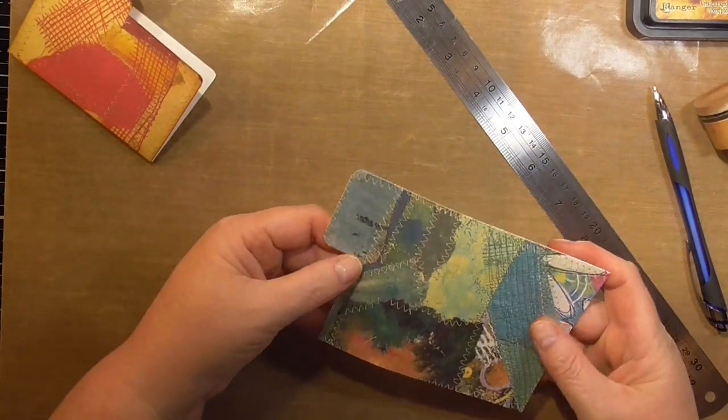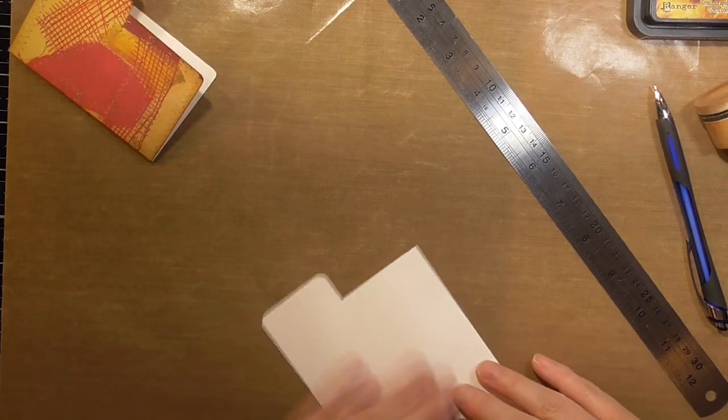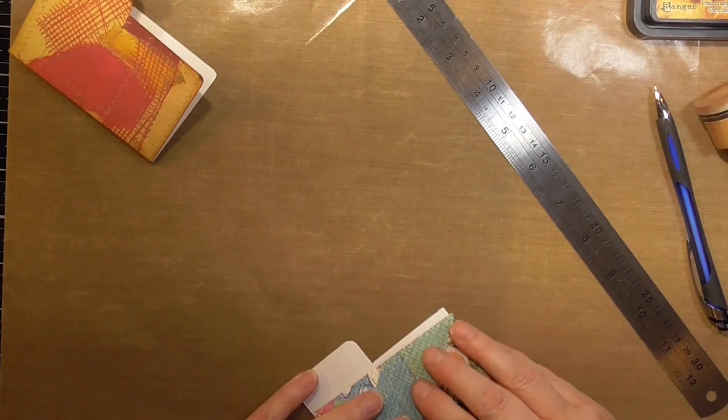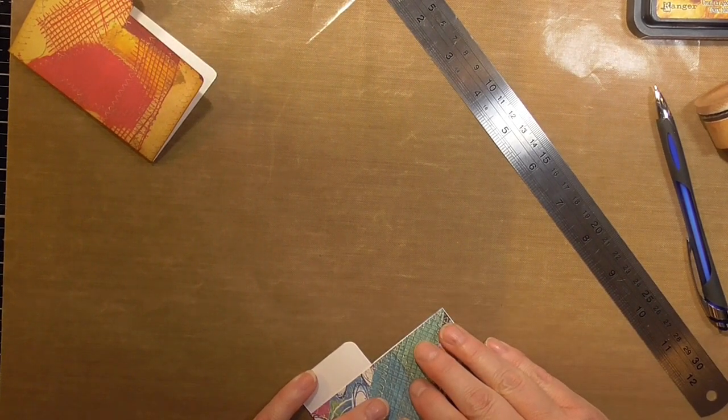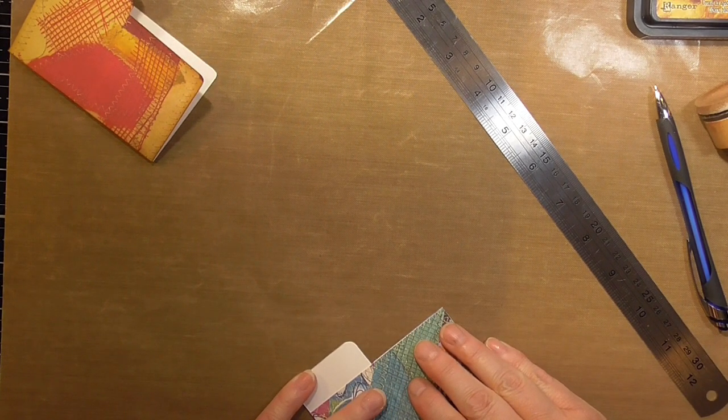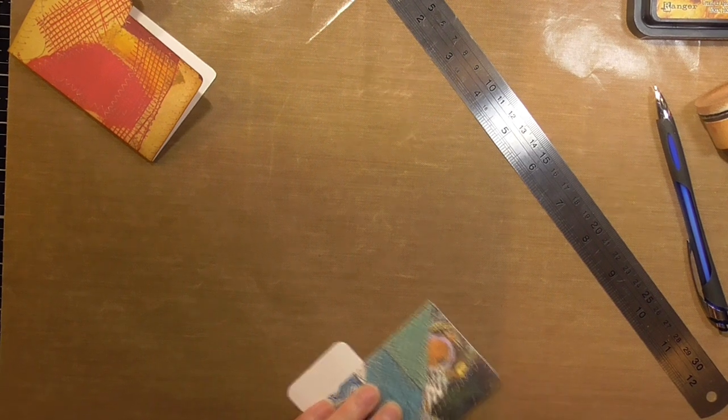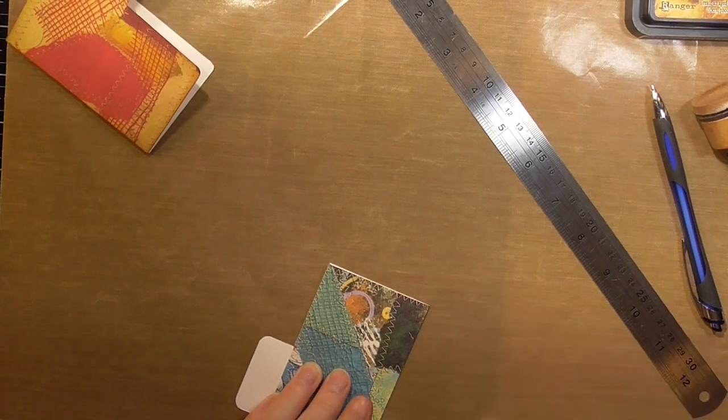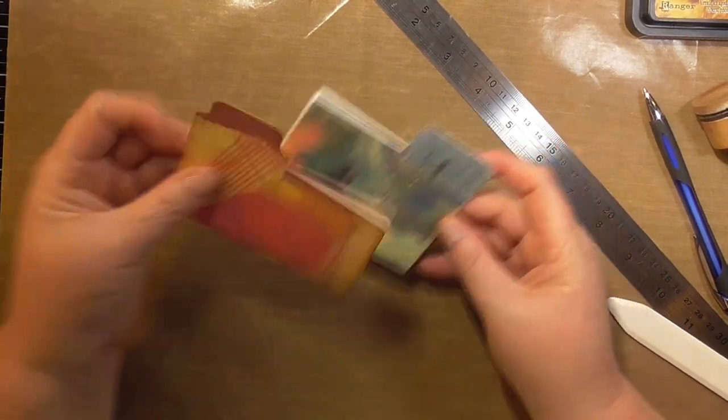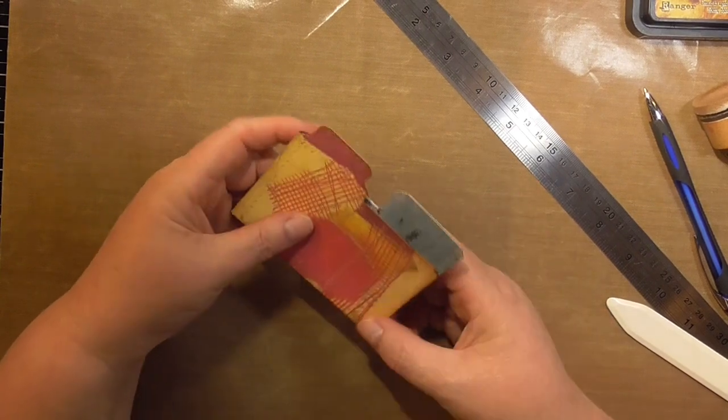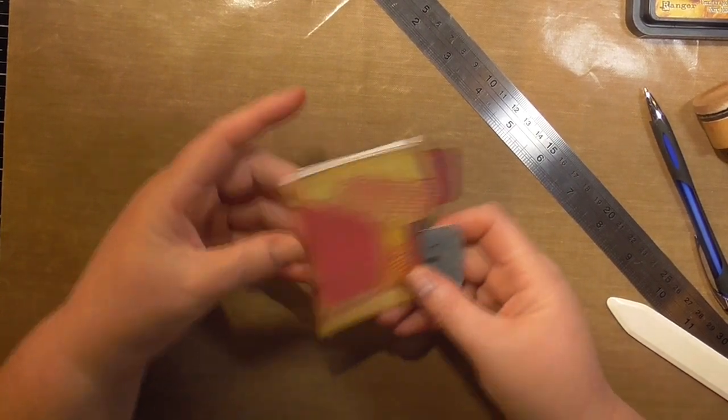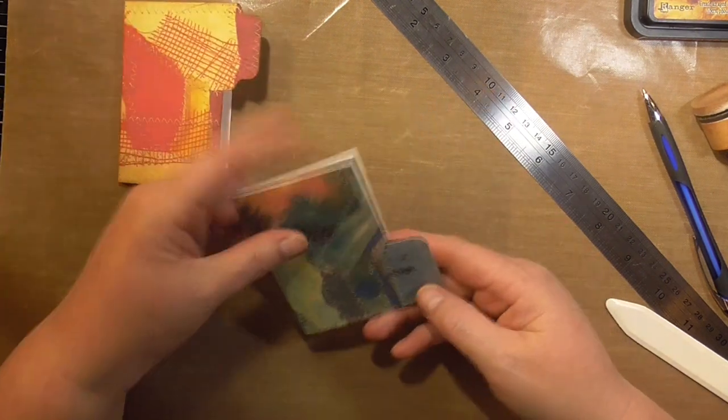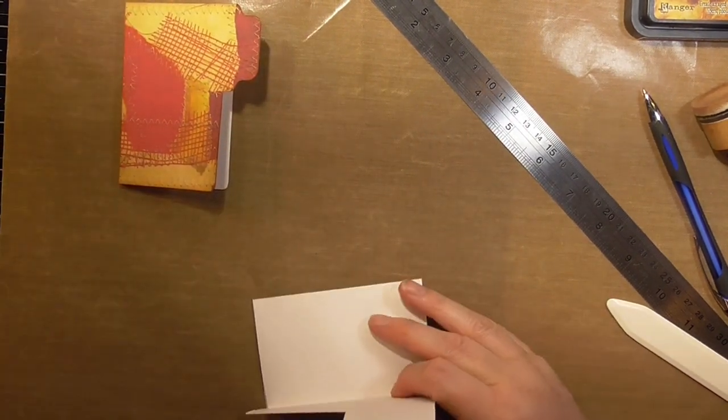So there we've got our folder and then if you don't have a scoreboard you can just bring this up and we're just going to do this as a flat folder this time. I will use my bone folder so there we've got a second and you will notice it is slightly taller because it hasn't got that seam or that spine rather.